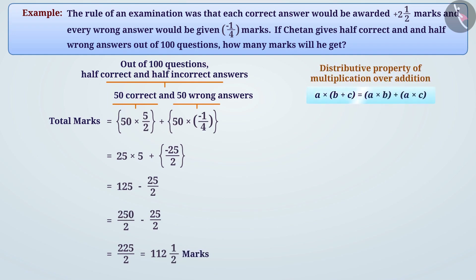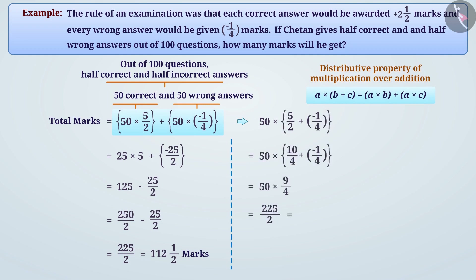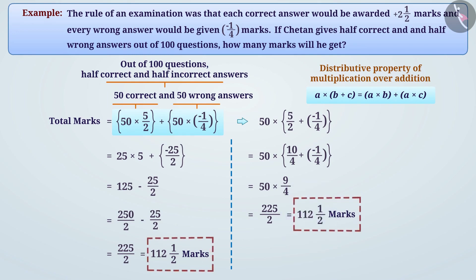Since the sum of rational numbers can be distributed over multiplication — a × (b + c) = a × b + a × c — we can also write 50 × 5/2 + 50 × (−1/4) as 50 × (5/2 + (−1/4)). Simplifying this also results in 112 and a half marks. Therefore Chetan will get 112 and a half marks in the exam, and both methods give the same result.